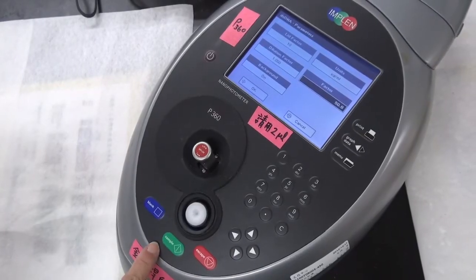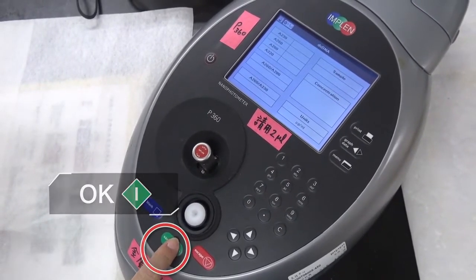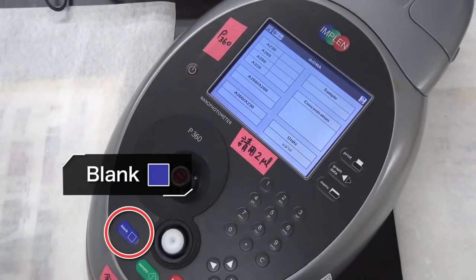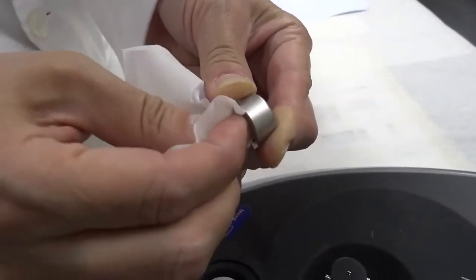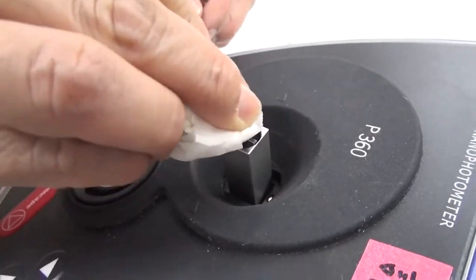9. After finishing the parameter setup, press OK to enter the measurement interface. 10. Press blank or reference to zero the machine. 11. Remove the lid. Wipe away the distilled water or blank solution from the lid and the sample well of the cuvette with a Kimwipes tissue.